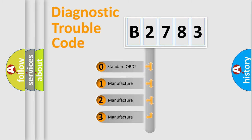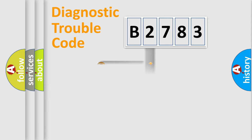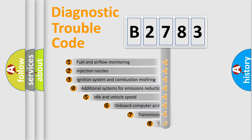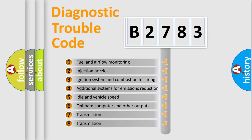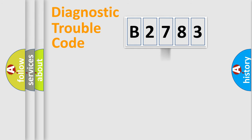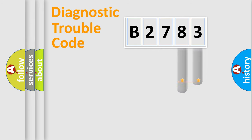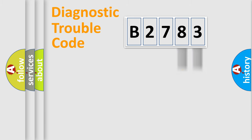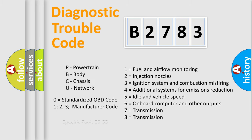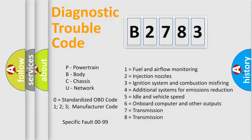If the second character is expressed as zero, it is a standardized error. In the case of numbers 1, 2, or 3, it is a manufacturer-specific error expression. The third character specifies a subset of errors. This distribution is valid only for the standardized DTC code. Only the last two characters define the specific fault of the group.